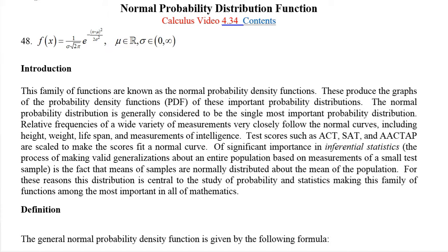The PDF for the normal distribution has a formula that looks like this: f(x) equals 1 over sigma times the square root of 2π, times e to the power of negative (x minus μ)² over 2σ². Mu and sigma are constants — parameters. Mu is a real number and sigma is a positive number.